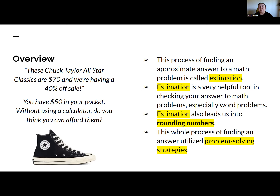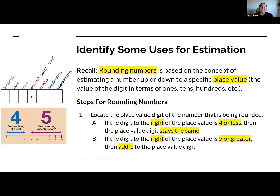As we all know, we have calculators in our pockets because we have phones, but estimating can be a useful skill as well. First, we're going to identify some uses for estimation. As a recall, rounding numbers is based on the concept of estimating a number up or down to a specific place value — the value of the digit in terms of ones, tens, hundreds, and getting smaller: tenths, hundredths, thousandths, and so on.